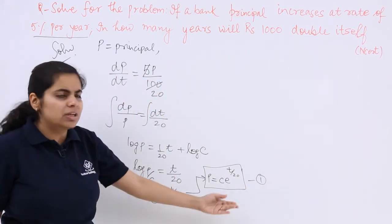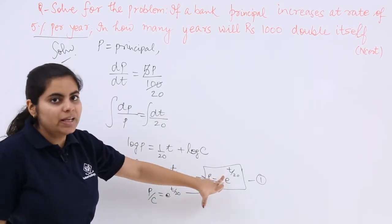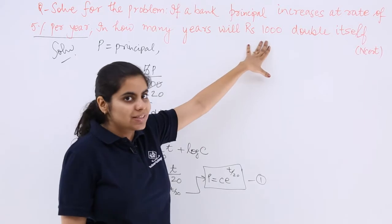Because there is no other equation, I hope, which will be useful to us. So initially that means when time was 0, when time was considered 0, your P was rupees 1000.